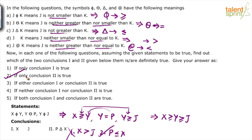Coded inequalities is, in my view, the easiest topic that you can get in reasoning — one of the easiest topics. You just have to remember those three rules discussed in the videos. Let me learn the symbols by heart before I clear the screen: greater than or equal, equal, less than or equal, greater, less.